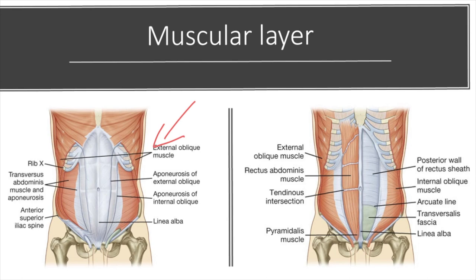Immediately deep to the external oblique is the internal oblique. I like to think of the internal oblique as the opposite of the external oblique — since the external oblique points down, the internal oblique points up, so its fibers point superiomedially, up and toward the middle. Then immediately deep to the internal oblique is the last of the flat muscle groups: the transversus abdominis. Its fibers don't point up or down — they simply go horizontally toward the middle.